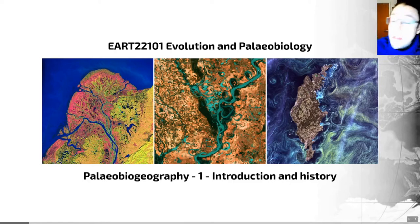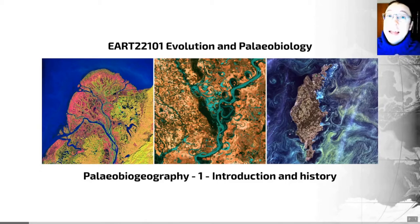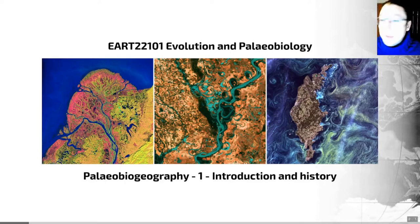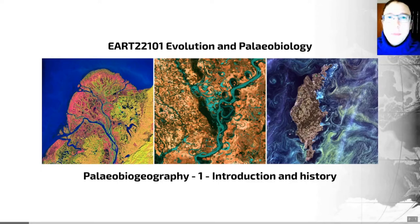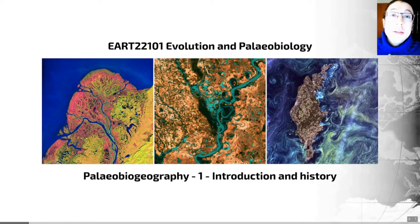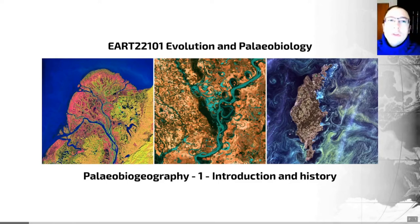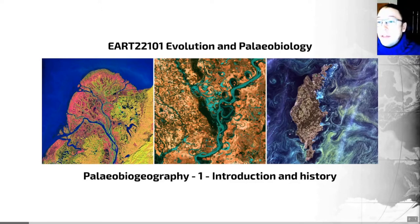I haven't had the time in this lecture course to mention the history of all of the topics that we've been through, even though they're really interesting and a really good way of actually understanding the origin of some of the ideas you've been taught. I thought it would be particularly useful to cover the history of this topic partly because it helps us understand where it's come from and the insights that paleobiogeography — or at least biogeography — have had on the development of our understanding of evolution. I also wanted to talk about history in at least one of these lectures so I could introduce a few really important concepts when it comes to considering what is good practice and what is bad practice in the history of science.